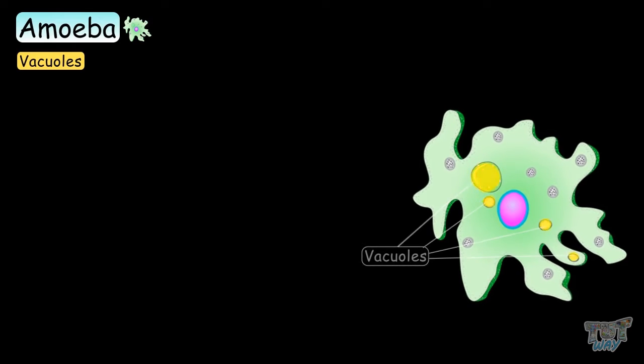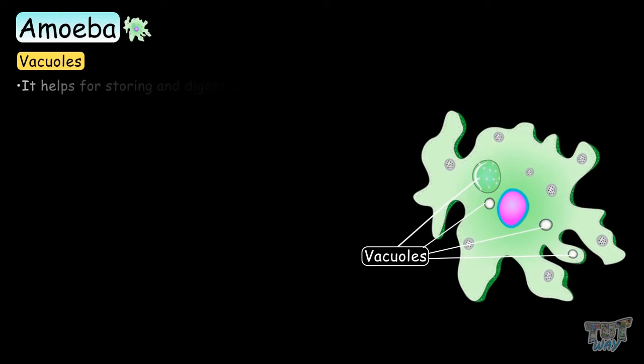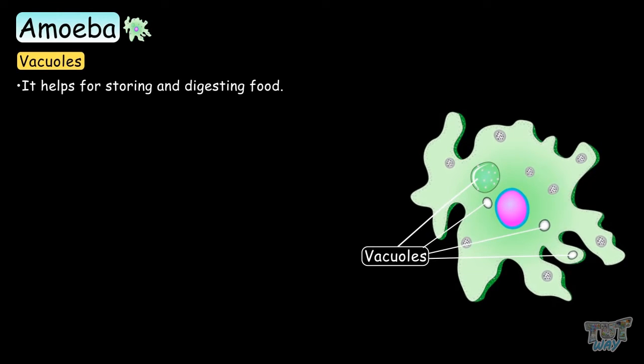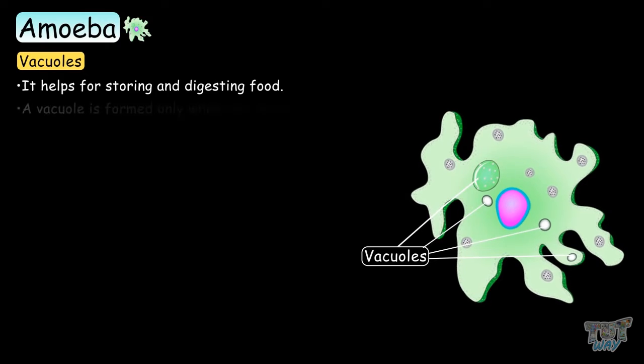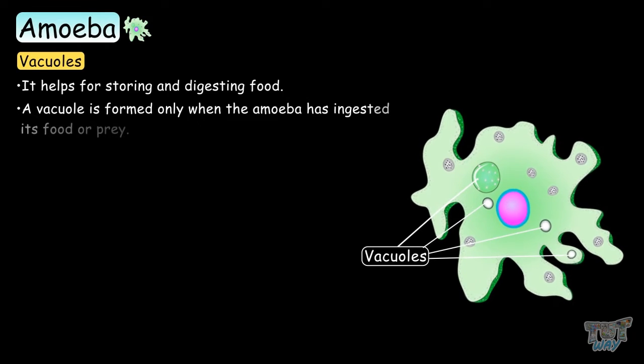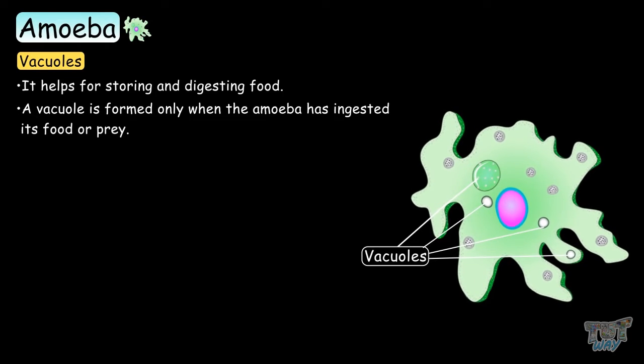Vacuoles are used for the storage and digestion of food. A vacuole is formed only when the amoeba has ingested its food or prey.